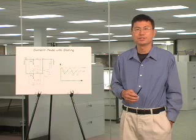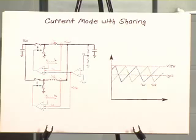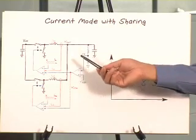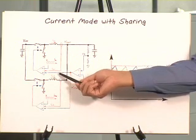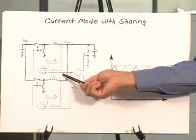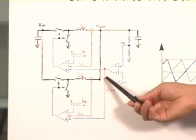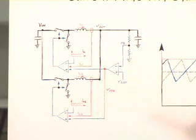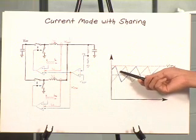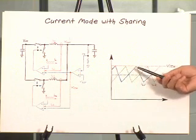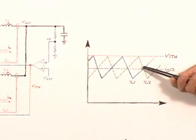Current mode control makes current sharing very simple and straightforward. As you can recall, in current mode control, the inductor current has to follow the error amplifier output voltage. In this case, we just use a single error amplifier and share the error amplifier output voltage among channels. By doing this, naturally, you have good current sharing among channels. This is inherent current sharing, which is also fast cycle-by-cycle current sharing.